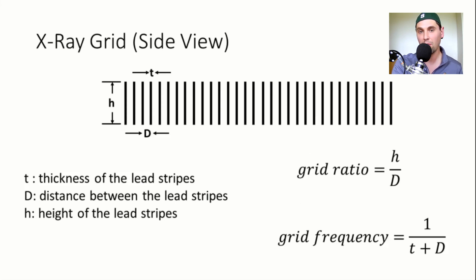You're going to want to check out our video that we have about the Bucky factor and the contrast improvement factor. And those are dependent on the grid ratio. And they quantify the ability of the grid to improve the contrast to see objects. But then also there's a relative dose penalty, which is quantified by the Bucky factor.